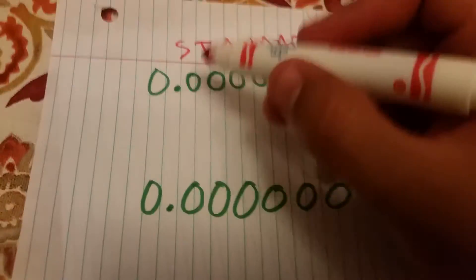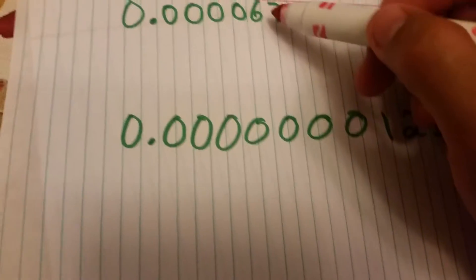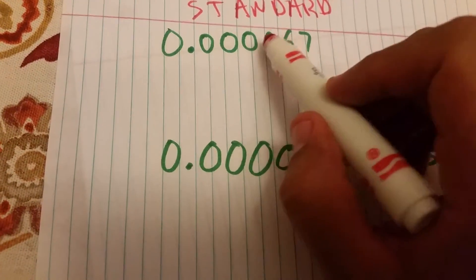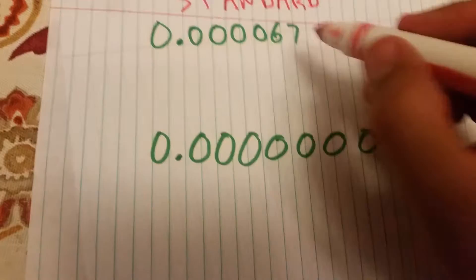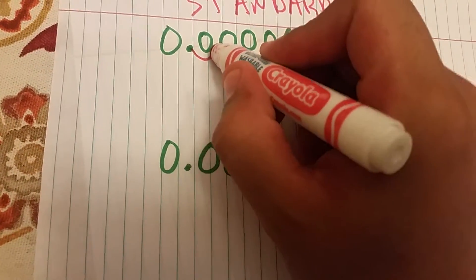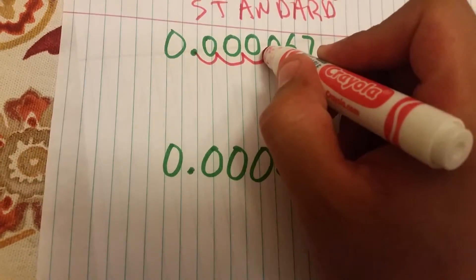The way you switch it to scientific notation is you've got to move the decimal to the first number you encounter that's a non-zero number. These are all zeros right here, so you can't, you have to keep going all the way until you find the first number that is not a zero.